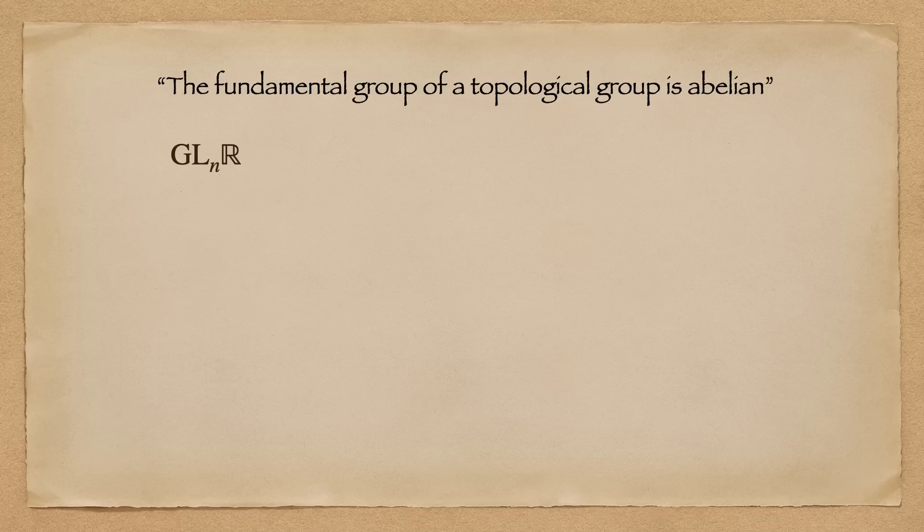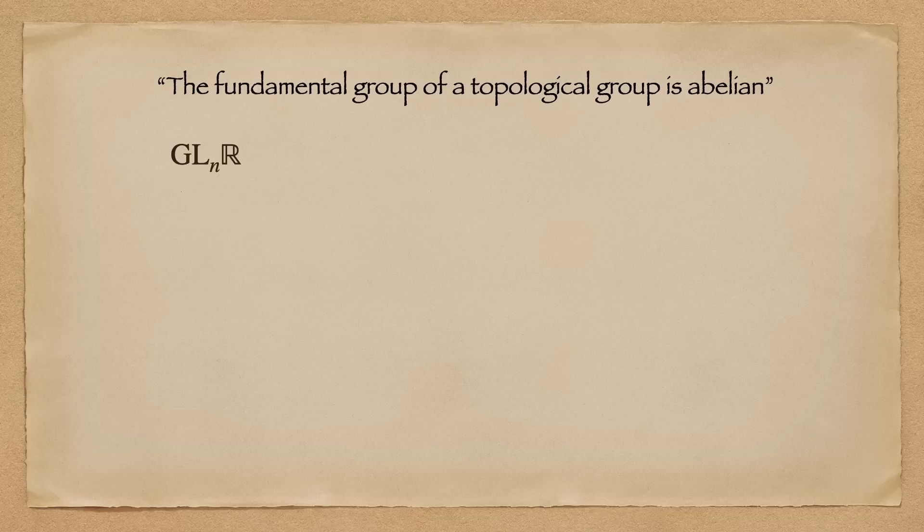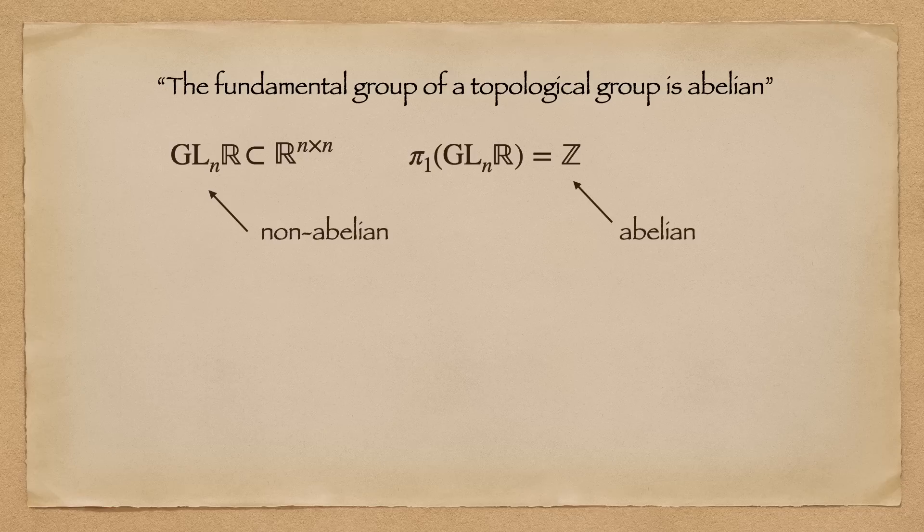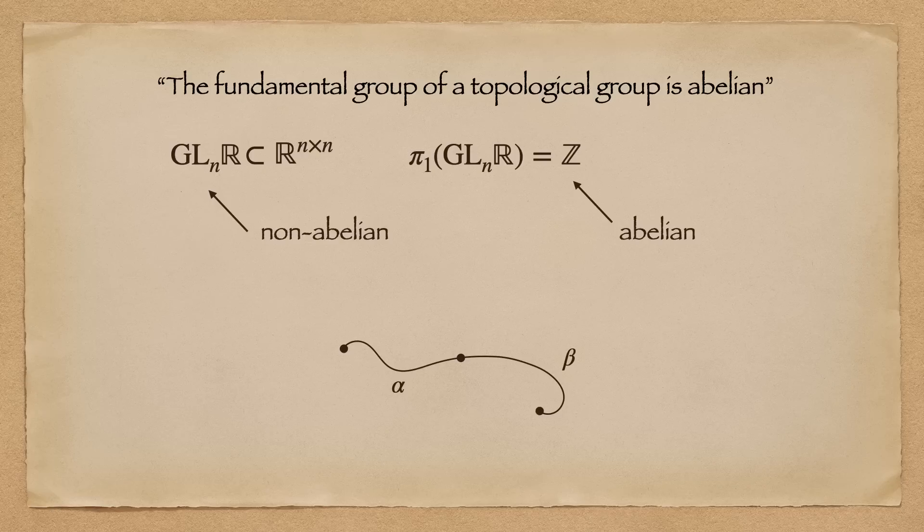A topological group is a topological space with a group structure. An example is a general linear group consisting of all invertible n-by-n matrices with real entries, which can be viewed as a topological group with topology defined by viewing it as a subspace of the Euclidean space R n cross n. This group itself is non-abelian, but its fundamental group is isomorphic to the integers with addition, which is abelian. The classical proof of this requires explicit computation to show that all paths in the topological group are abelian with respect to concatenation.